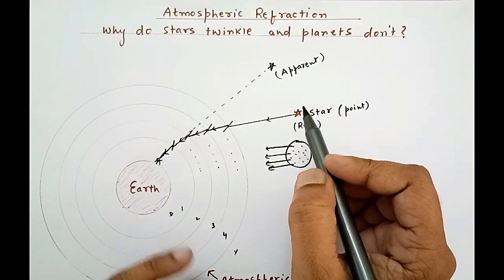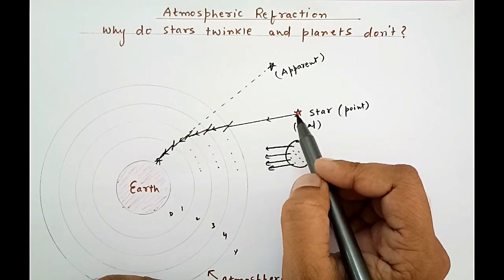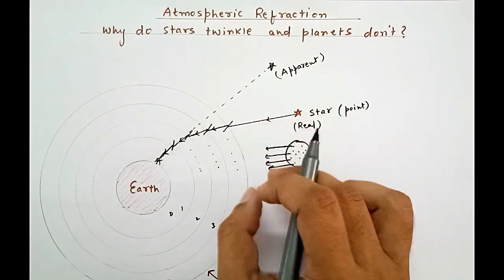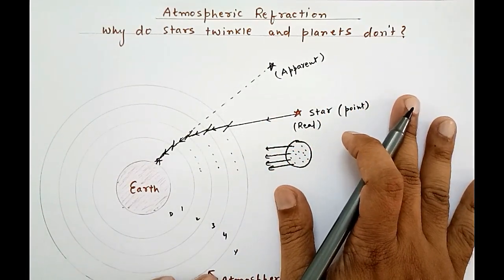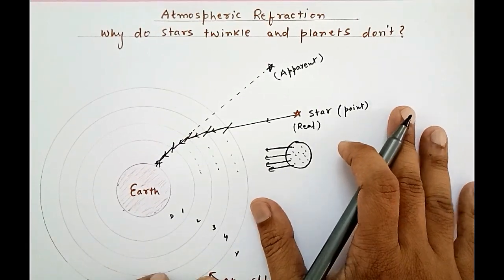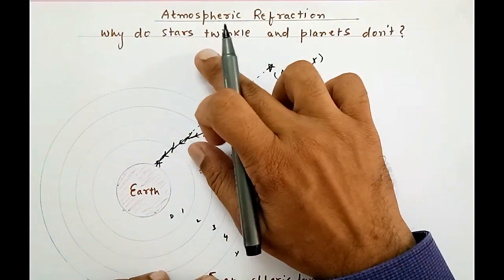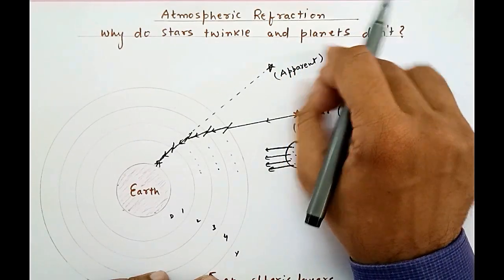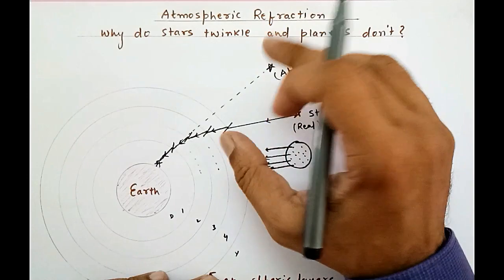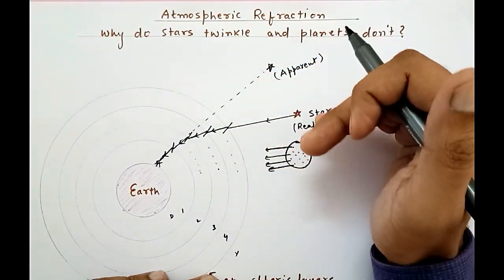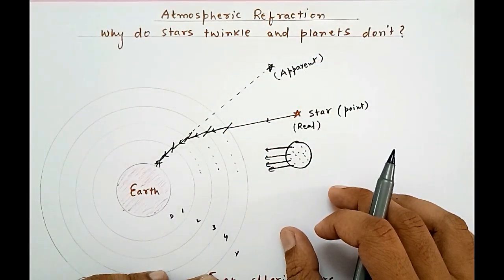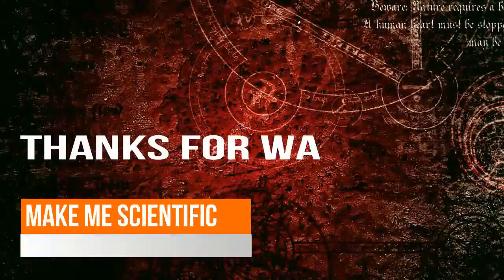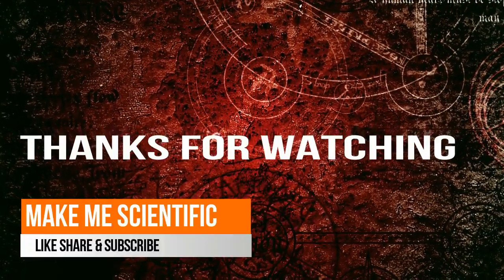Another thing is that most stars are luminous — they have their own light — whereas the light coming from a planet is the reflected light of the sun. So this is the first part in which we have talked about the twinkling of the stars and why planets don't twinkle. In the next part of the video, we will be talking about another aspect: the sunrise and sunset concept of refraction.